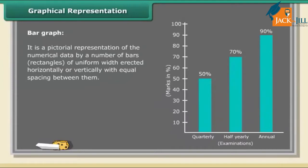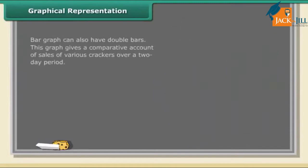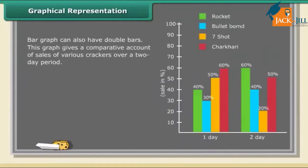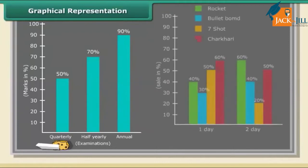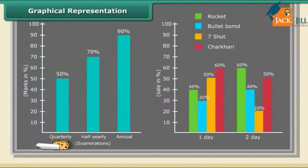Bar graphs can also have double bars. This graph gives a comparative account of sales of various crackers over a two-day period. From the graphs, the first graph shows the comparison of three examinations of a student. The second graph shows that for a variety of crackers, sales in two days.